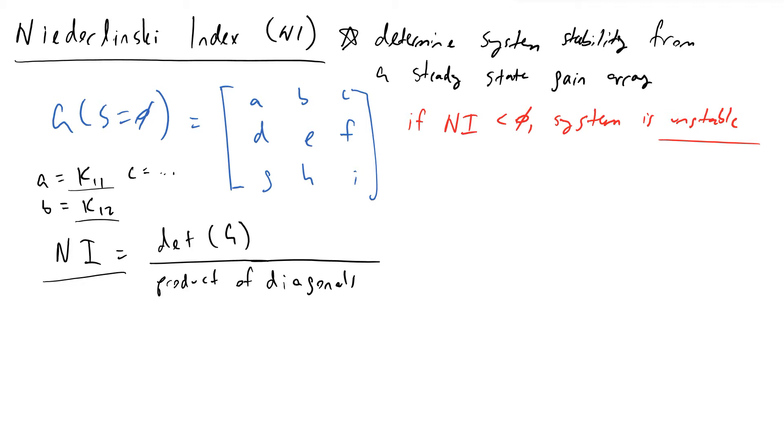And it's pretty quick and easy to do this, and the very first step in this process is going to be calculating the determinant of your steady state transfer function matrix, G.